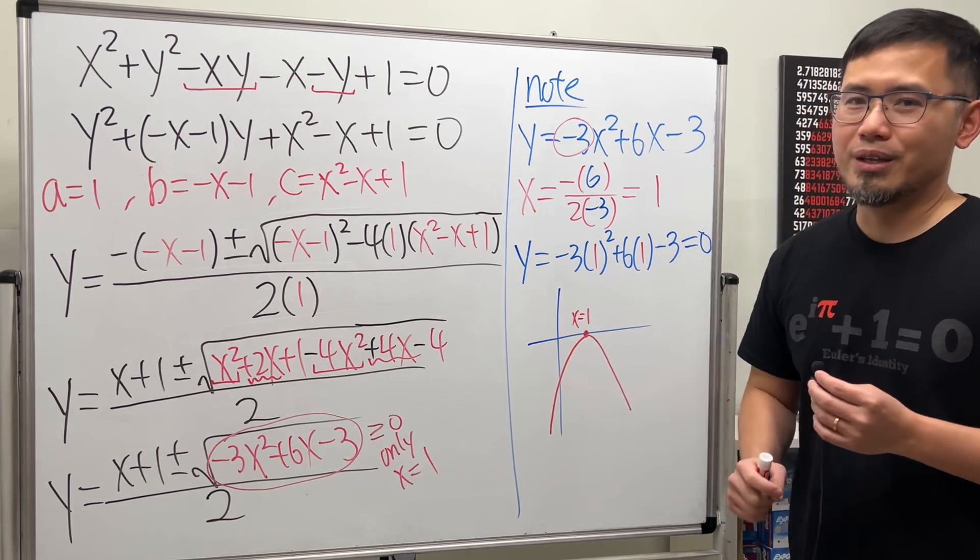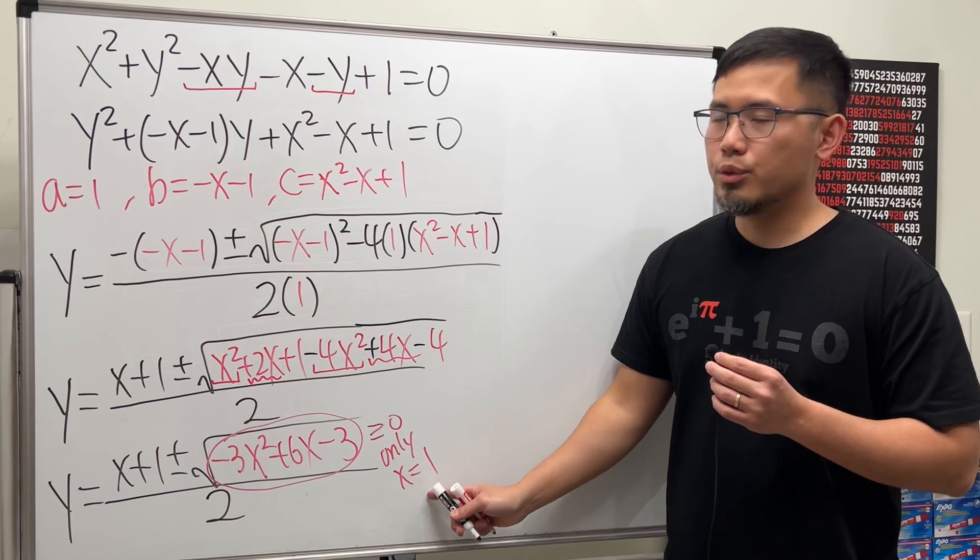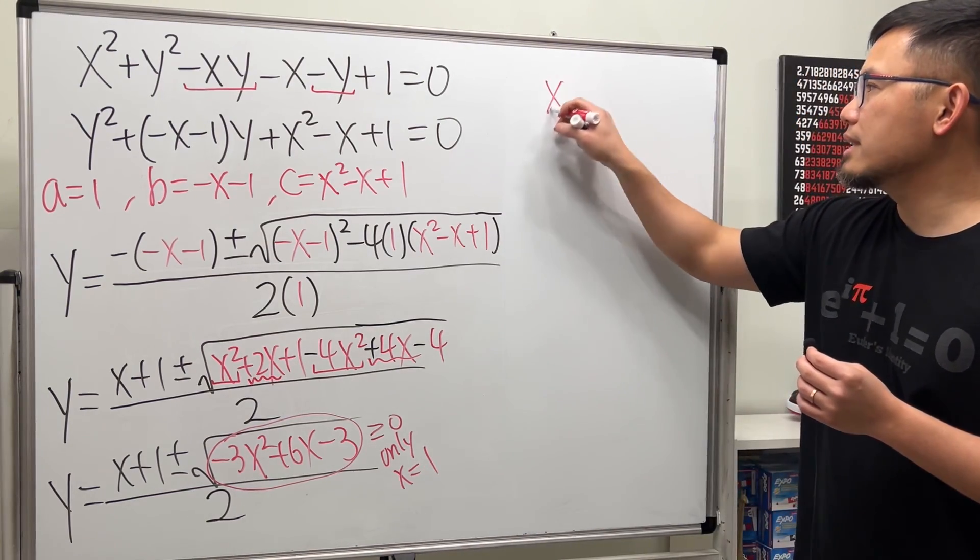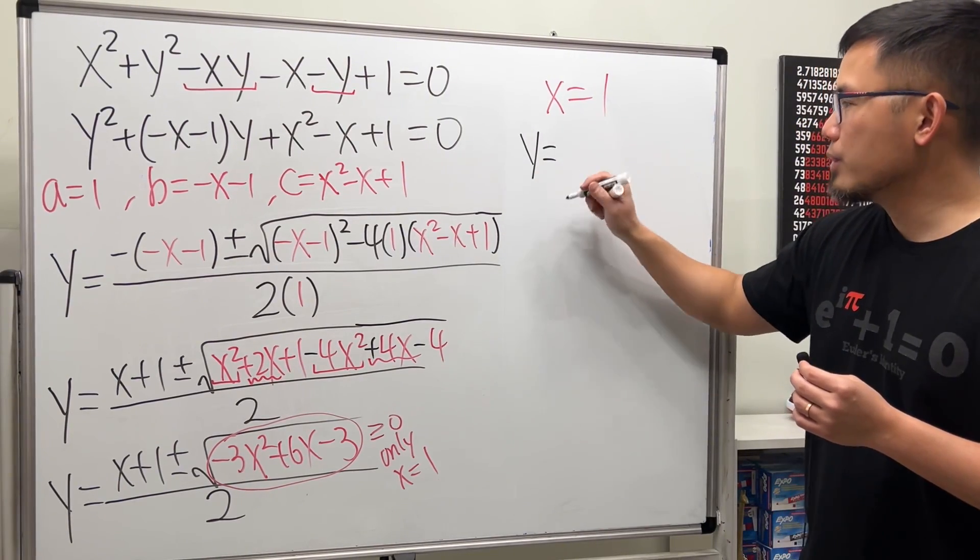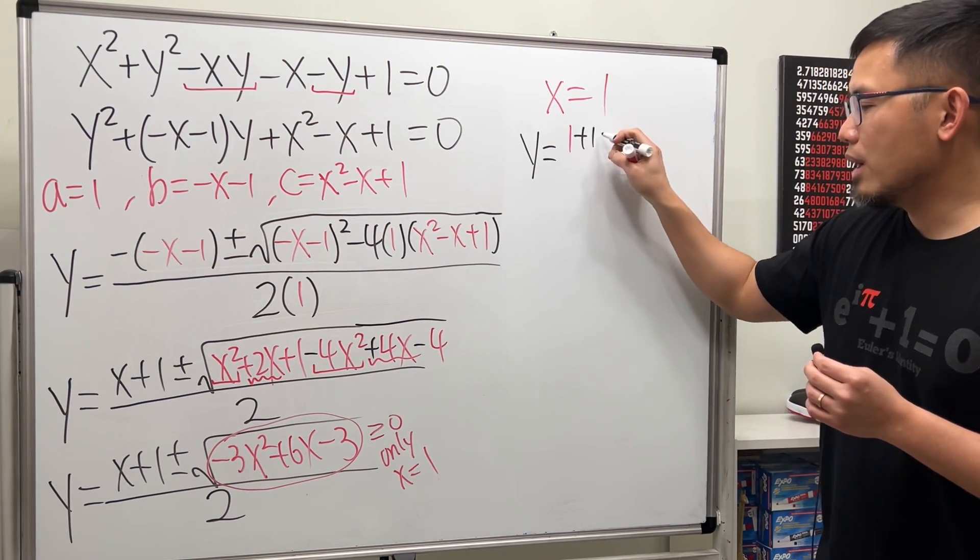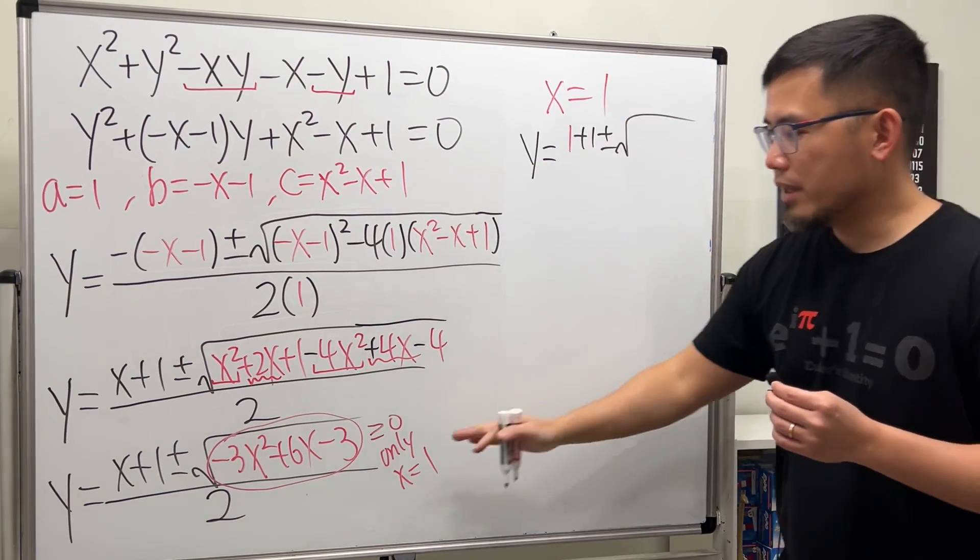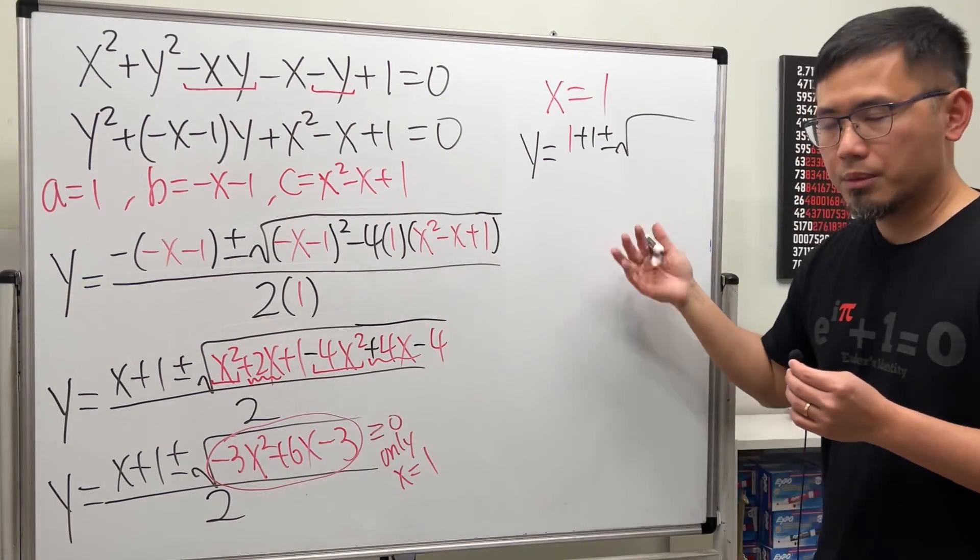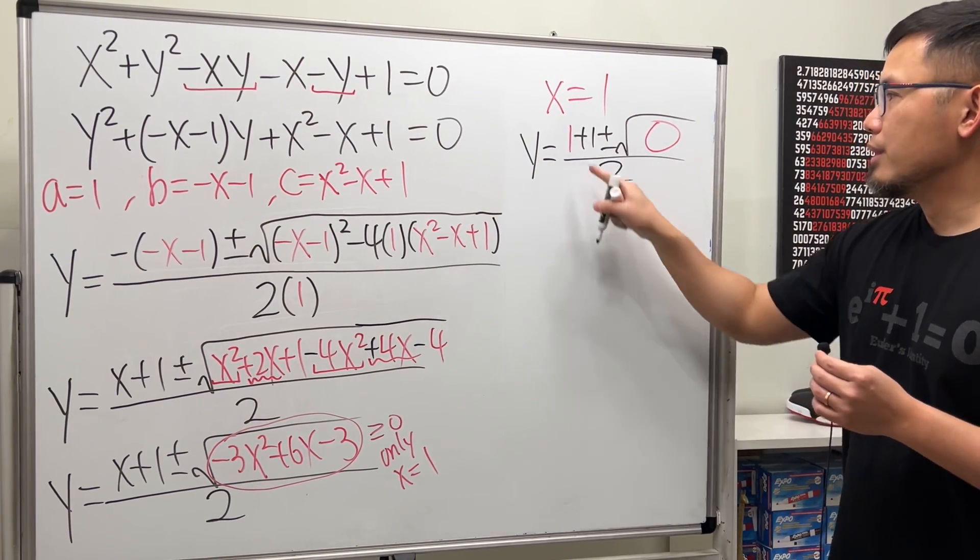As you can see, we can only use x is equal to one. And let's just go ahead and do that. When x is equal to one, plug in, then we'll get y is equal to one plus one plus or minus square root of—we know when x is equal to one this would be zero per our computation earlier—and then over two. So this is just two over two, so y is equal to one.